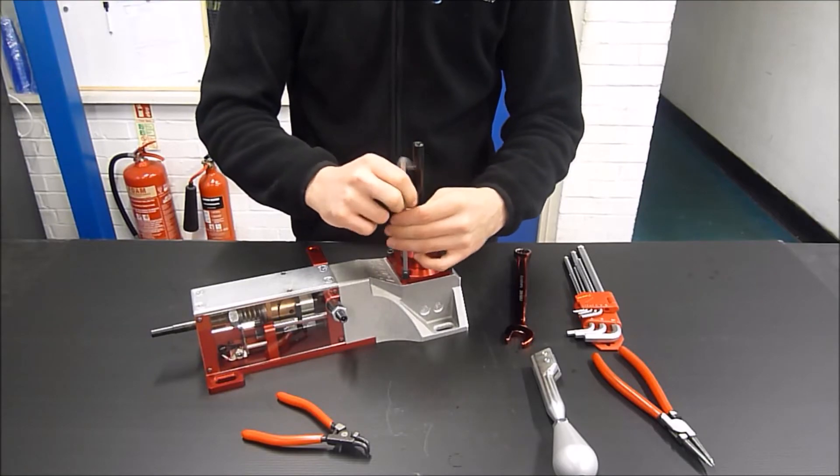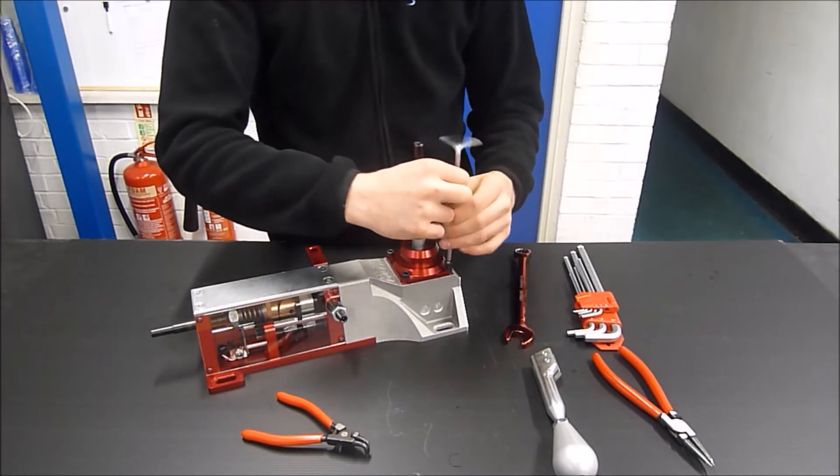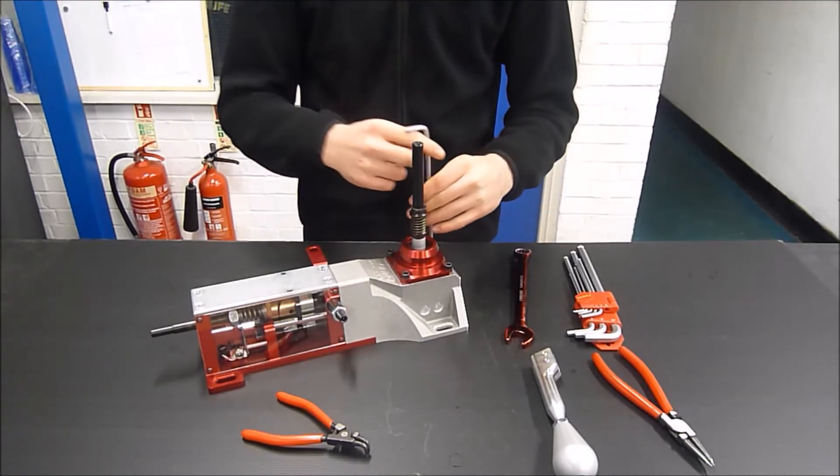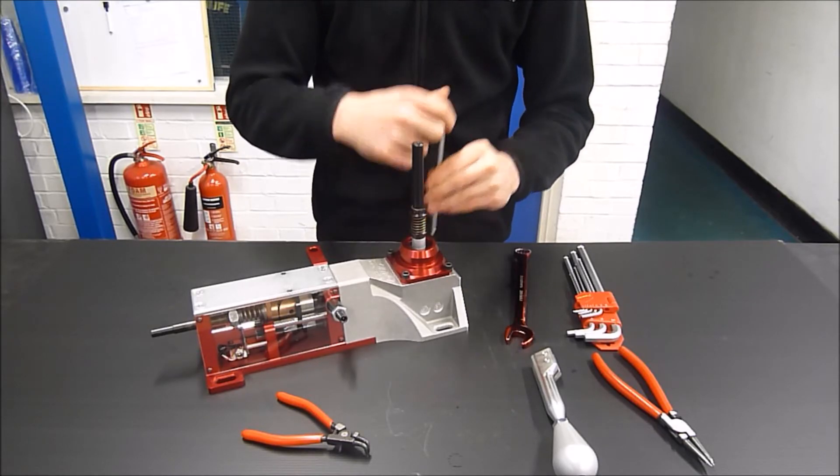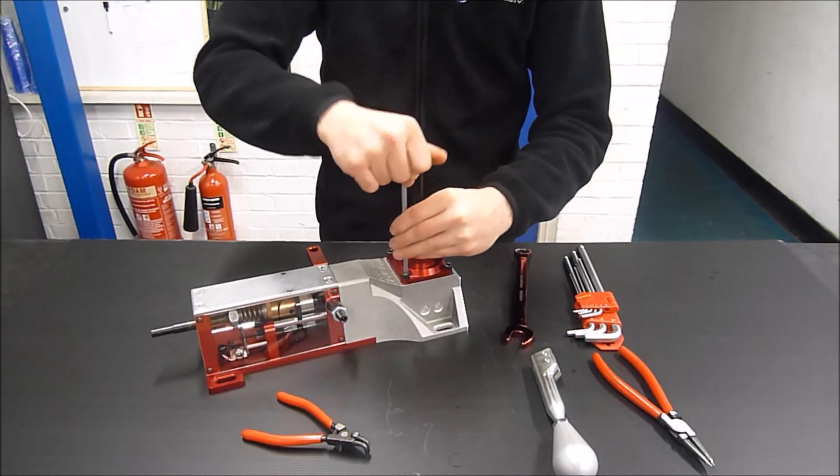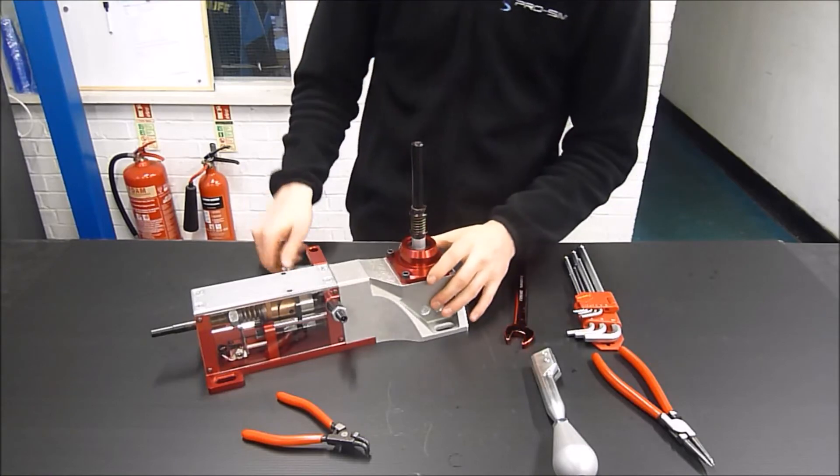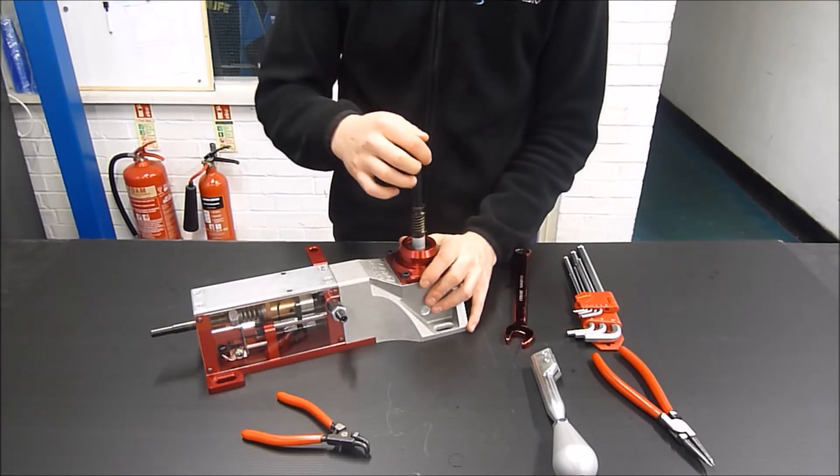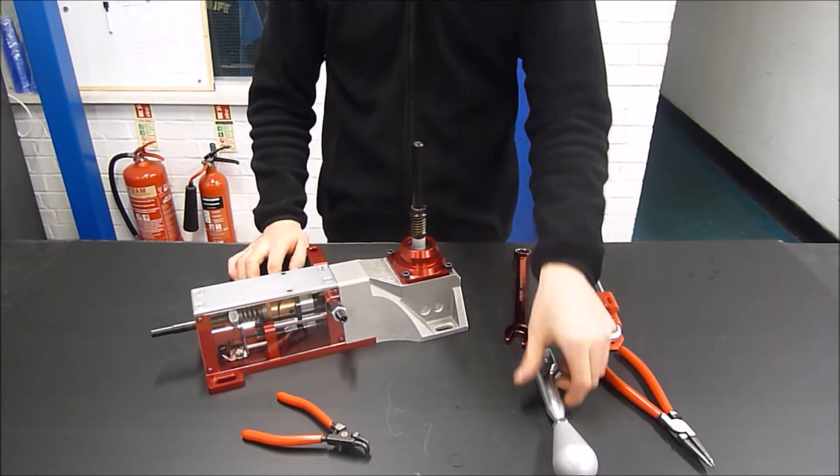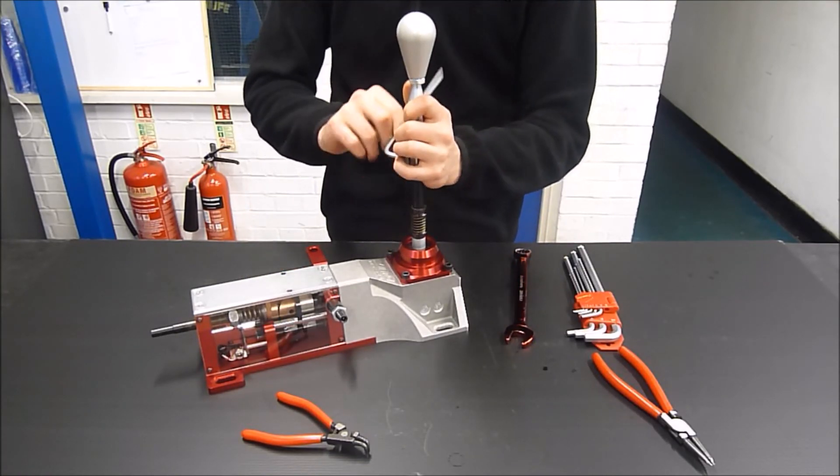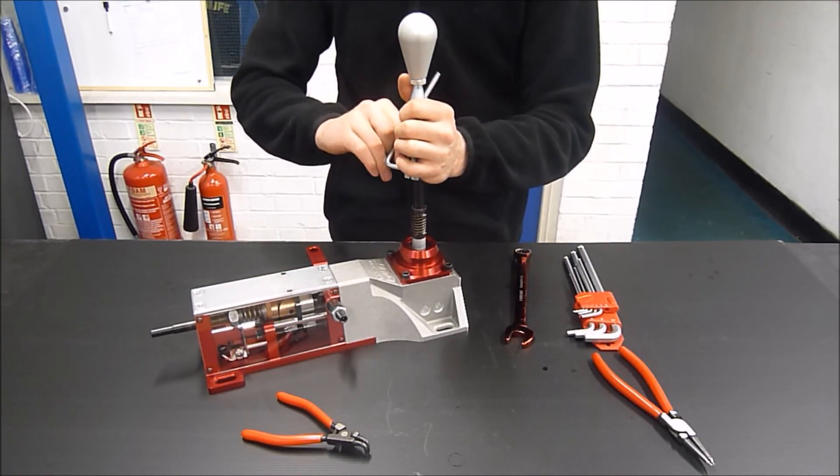And now even if we don't use the shaft extension, the lever will have more throw, so you can have a longer throw on the lever without a longer shaft, which is good depending on where you want to mount it. And then you can put the shaft extension back on and choose what distance you want.